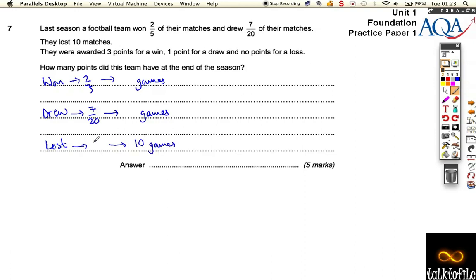So if we could work out this fraction here, we could then work out what the total games were and we could work backwards. Well, to do that, we need to add these two fractions up. We need to do 2 fifths plus 7 20ths, and we'll work out how much that is. And then the bit that's missing to make a whole is going to be how many games they lost.